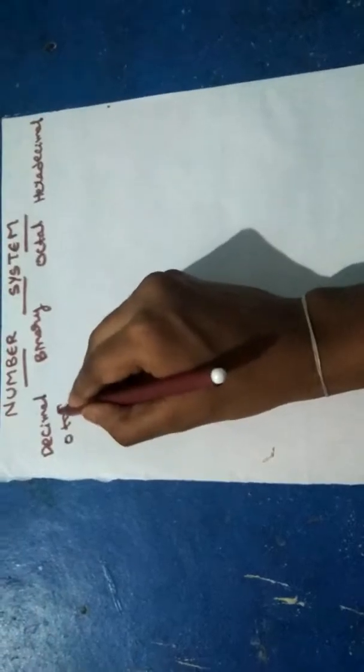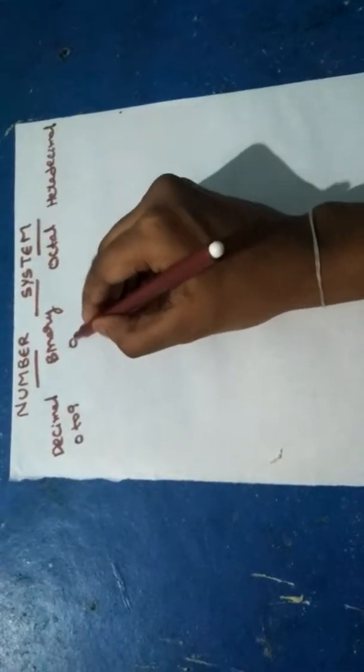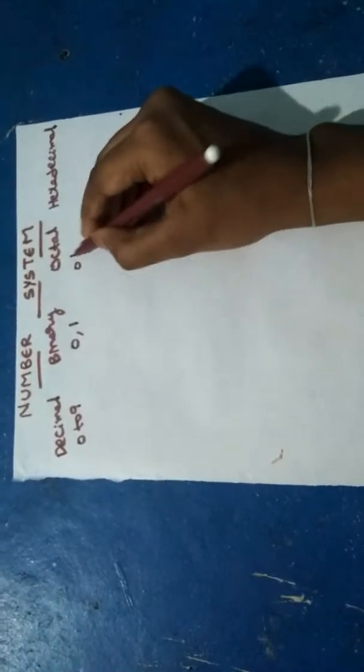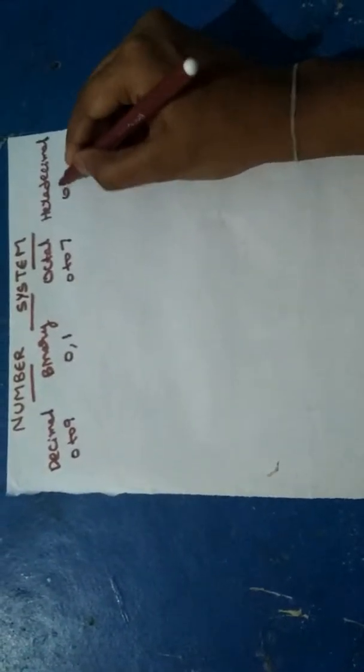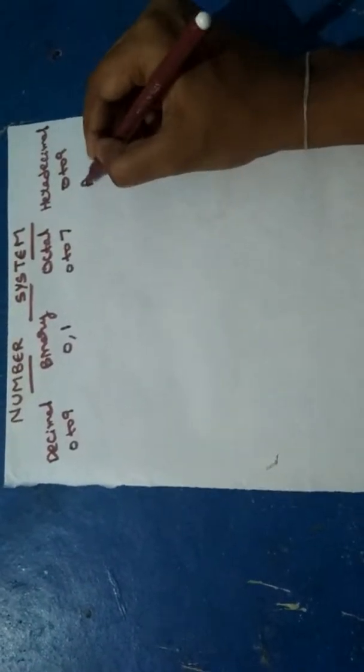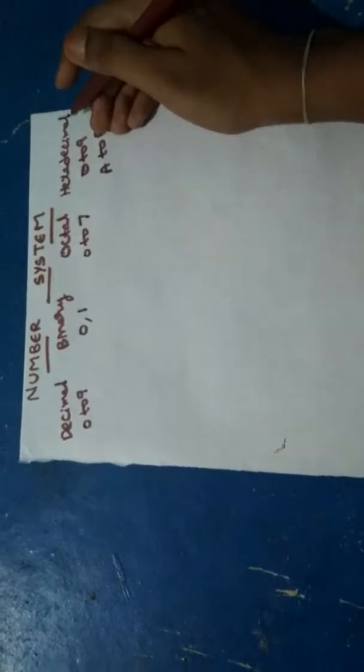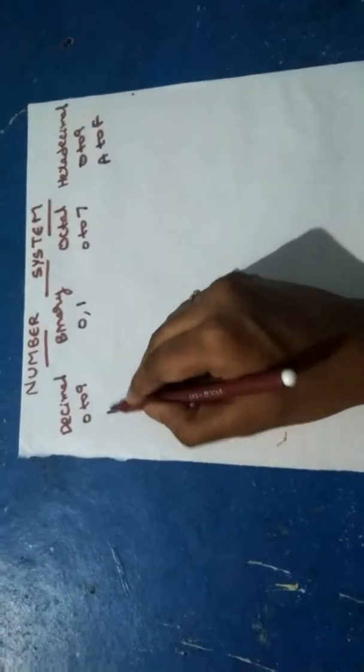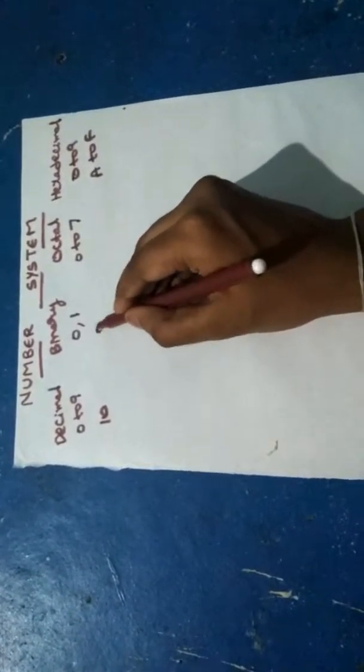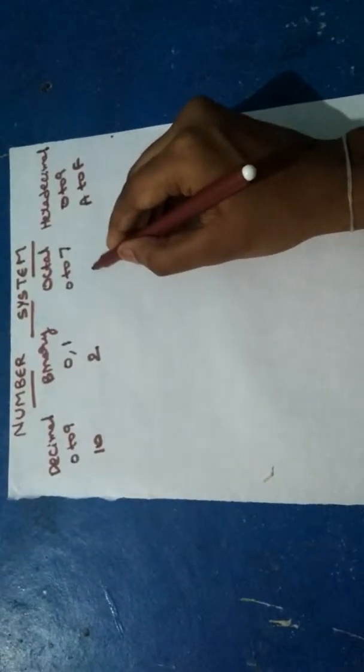from 0 to 9, in binary 0 and 1, in octal 0 to 7, and in hexadecimal 0 to 9 and A to F. The base of the decimal number system is 10, the base of binary number system is 2, the base of octal number system is 8, and the base of hexadecimal number system is 16.